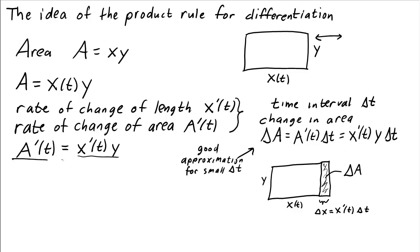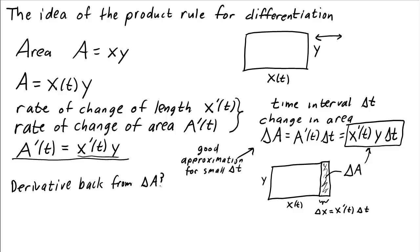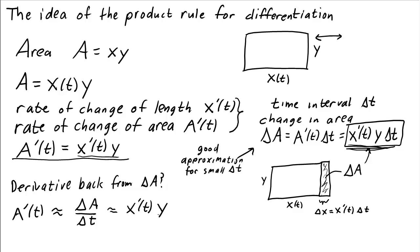Let's imagine for a second that we forgot what the derivative a prime of t was, but all we knew was that for the small interval delta t, the amount that the area changed was delta a. How can we get the derivative back from delta a? Well, the derivative is this rate of change, so we can get that the derivative is approximately equal to the amount of change delta a divided by the time interval delta t. This gives us x prime of t times y — we get back the expression we started with. To be precise, we need to take the limit as delta t goes to zero, but we're not trying to be precise right now.